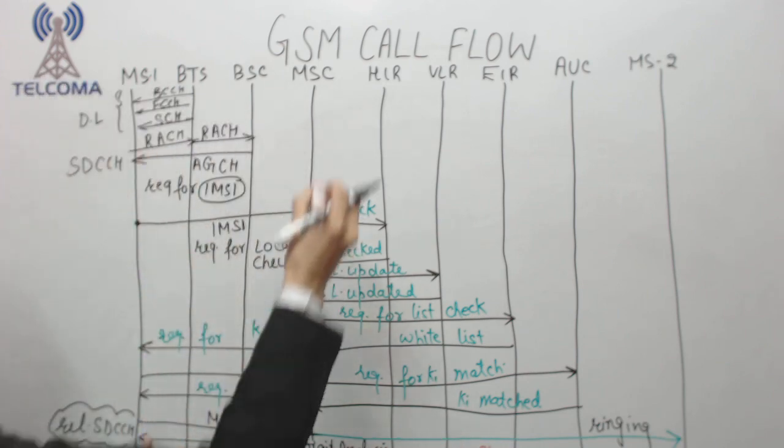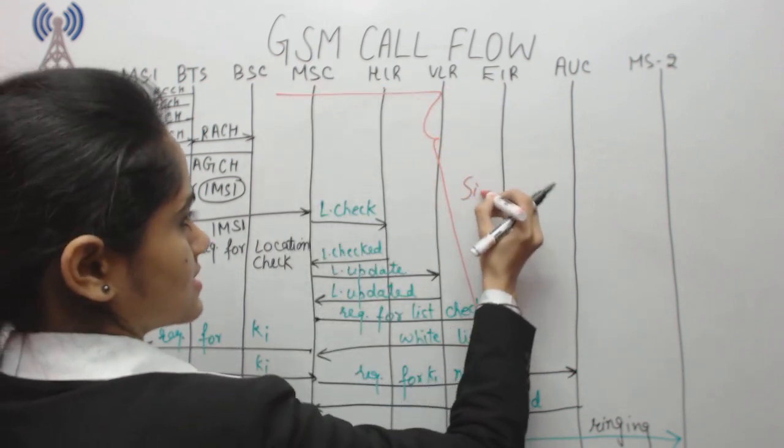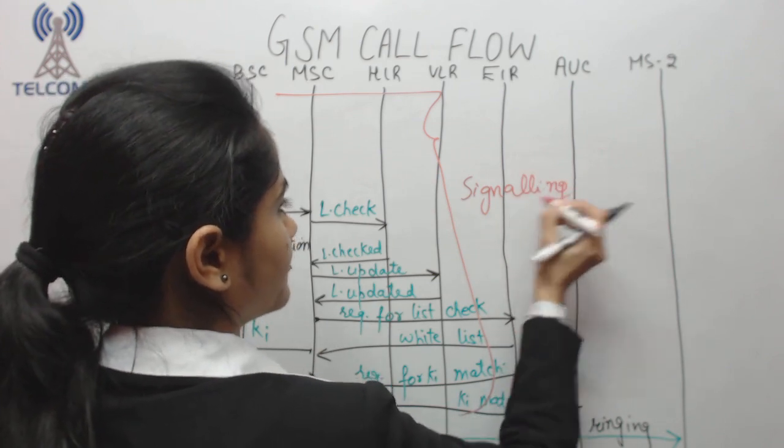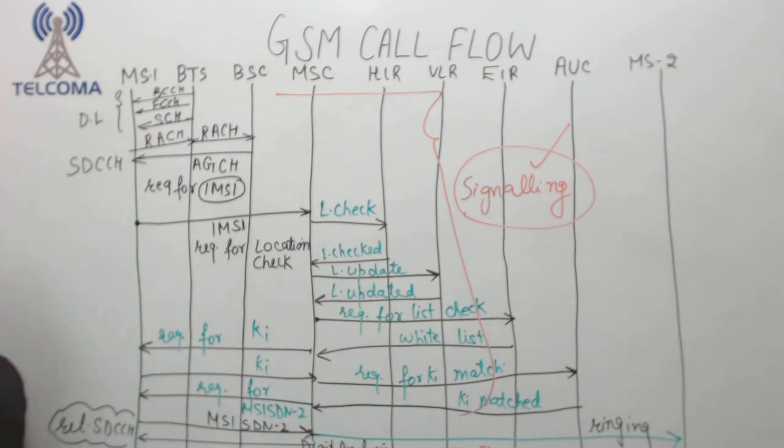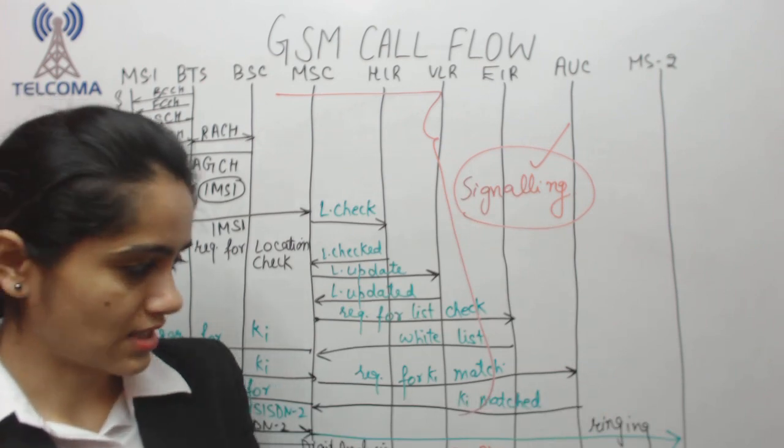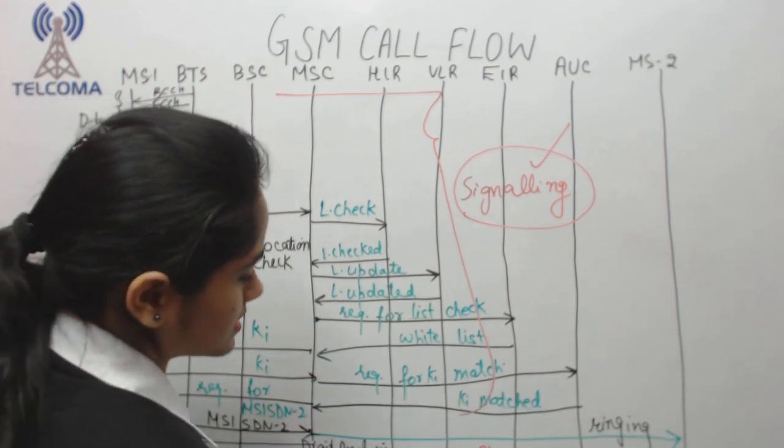This whole procedure before ringing is called signaling process - that means controlling or checking. Before ringing we have signaling process, and after that TCH on which we have the final conversation.